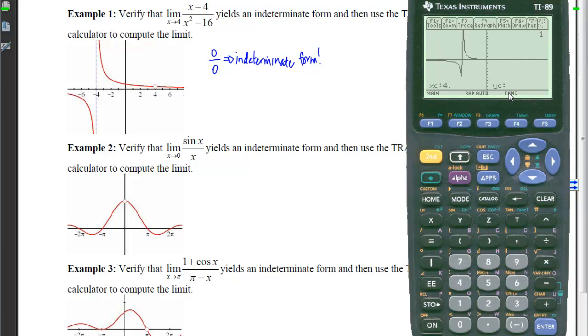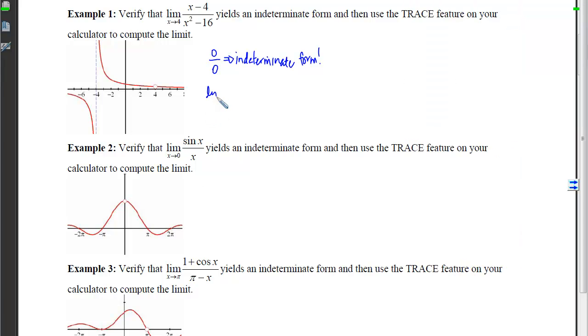So I'm verifying that I have a hole. There's that 0 over 0. To compute the limit, if you recall, I'm just going to trace really close to 4. I can either trace on the left-hand side or on the right-hand side. If I go on the left, we can see that y-coordinate is getting close to 1 eighth. So the limit as x approaches 4 of x minus 4 over x squared minus 16 is going to be 1 eighth.